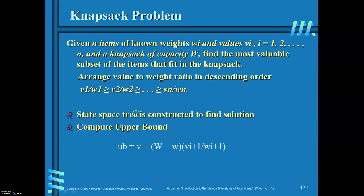In order to do this, first, for all the items, find out the value-to-weight ratio and arrange this value-to-weight ratio in descending order. This is the first condition in order to apply the branch and bound design technique. Next, you are required to construct a state space tree to find the solution.